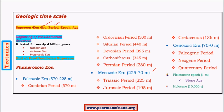This order was once asked in UPSC prelims as a multiple choice question. We know earth was born about 4.5 billion years ago, explained by the nebula theory of Laplace, which we have seen in previous videos.